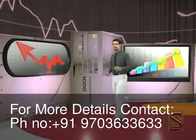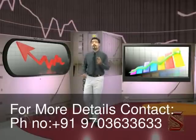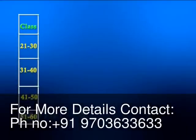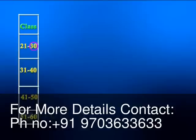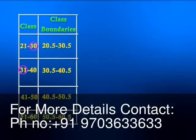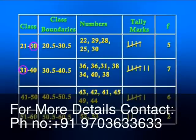We create boundaries from the existing class limits. We simply find the average of the upper limit of the first class and the lower limit of the second class. The upper limit of the first class is 30 and the lower limit of the second class is 31. The average of 30 and 31 is 30.5. So we have class boundaries like 20.5 to 30.5, then 30.5 to 40.5, and then again 40.5 to 50.5. We repeat this for all the classes and then we get a new set of class boundaries, and the frequency table changes to frequency distribution.